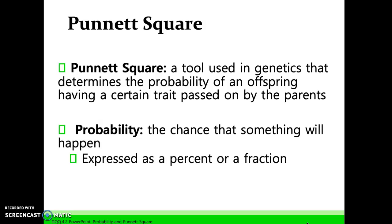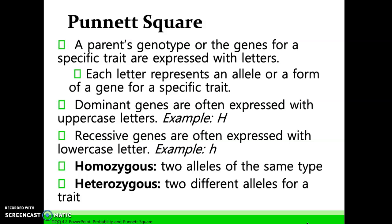A Punnett square is a tool used in genetics that determines the probability of an offspring having a certain trait passed on by the parents. Probability is the chance that something will happen, expressed as a percent or a fraction. When using a Punnett square, the parent's genotype for a specific trait is expressed with letters. Each letter represents an allele. Dominant genes are expressed with uppercase letters — for example, uppercase H. Recessive genes are expressed with lowercase letters — for example, lowercase h.